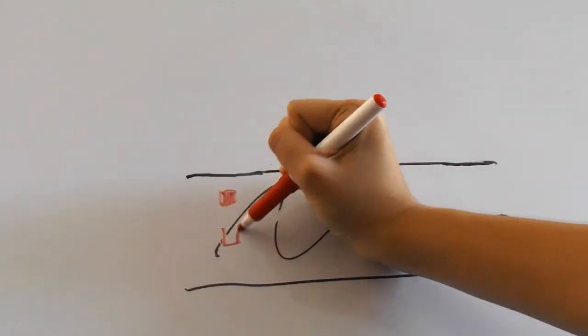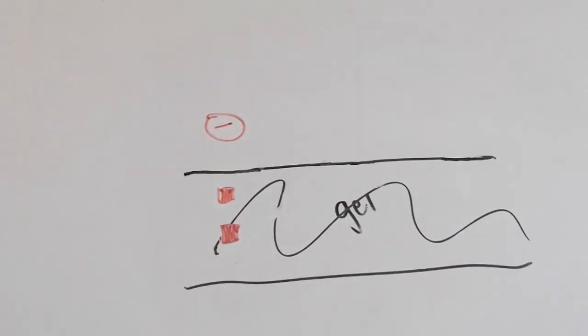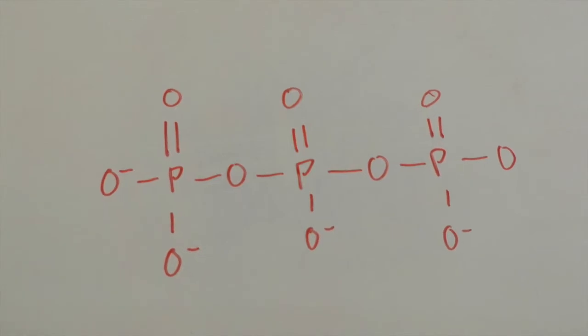It's very important to load the DNA onto the cathode, or negative side, because it will cause the DNA to run through the gel by itself. Here's why.